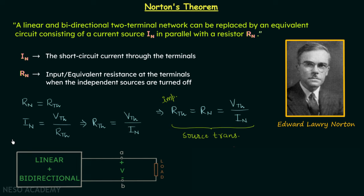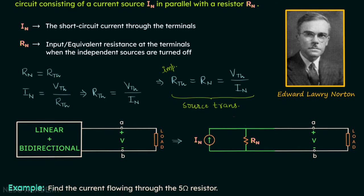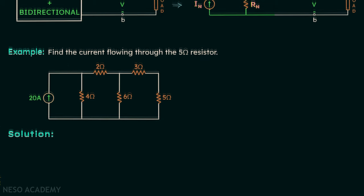To summarize Norton's theorem, consider a diagram where a black box represents a complex linear bidirectional two-terminal network with a changing load connected across it. To minimize calculations, we replace this complex network by In connected in parallel with Rn — this is our Norton's equivalent circuit. We then perform analysis on this equivalent network instead of the original complex network.